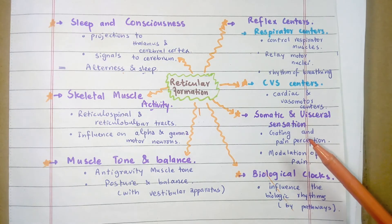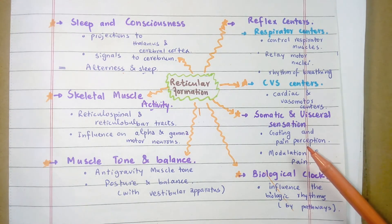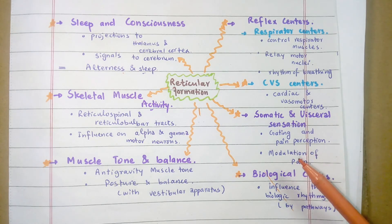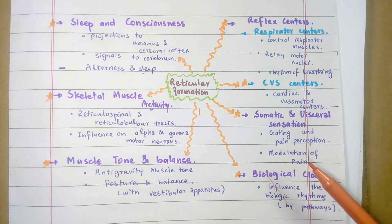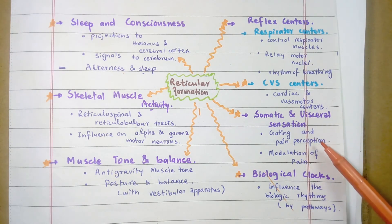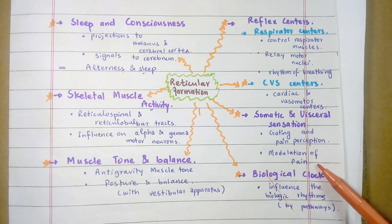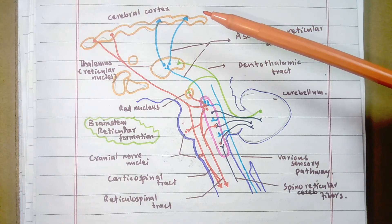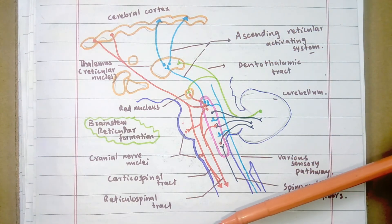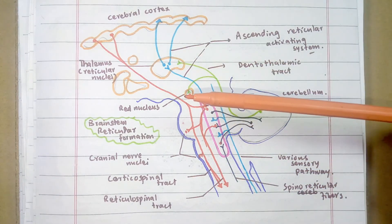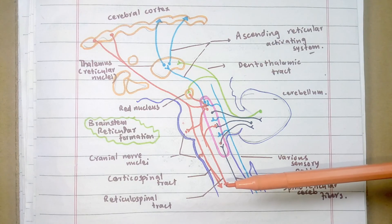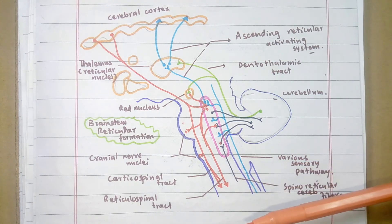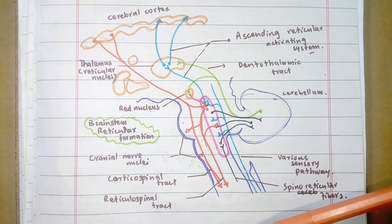Somatic and Visceral Sensation: Reticular formation influences the gating mechanism and the mechanism for control of pain perception. Because of its central location in the cerebrospinal axis, all ascending pathways passing to higher levels are affected by the reticular formation — this influence may be excitatory or inhibitory. Reticular formation is one means by which pain signals from the lower body reach the cerebral cortex, and it is also the origin of descending analgesic pathways. The nerve fibers in these pathways act in the spinal cord to block the transmission of some pain signals to the brain.